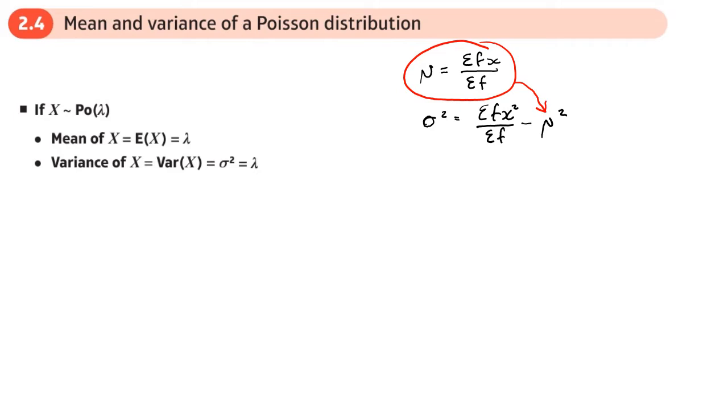Now with a Poisson distribution it's even easier. With a Poisson distribution, the rate lambda equals the mean equals the variance. How easy is that? They're all the same.